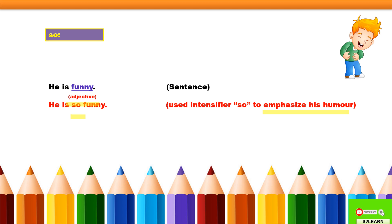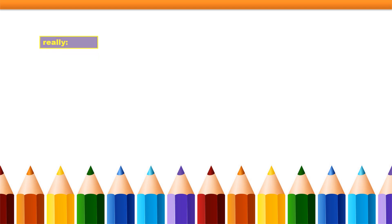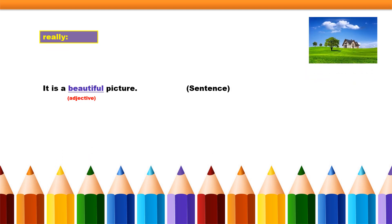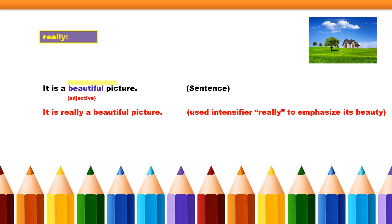I have used simple sentences so that you can learn the basics first. Now moving to the next intensifier, that is 'really.' The sentence is: 'It is a beautiful picture.' Here 'beautiful' is the adjective. After adding the intensifier, it becomes: 'It is really a beautiful picture.' I used 'really' to emphasize the beauty of the picture. Now we are getting how and why we use intensifiers in a sentence.